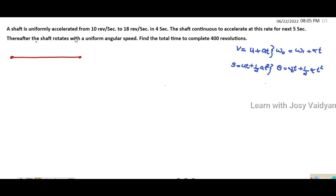A shaft is uniformly accelerated from 10 revolutions per second to 18 revolutions per second in 4 seconds. The shaft continues to accelerate at this rate for the next 5 seconds, thereafter the shaft rotates with uniform angular speed. We need to find the total time to complete 400 revolutions.